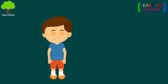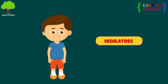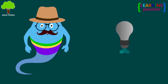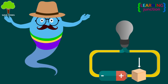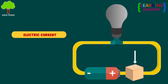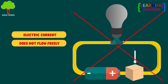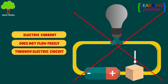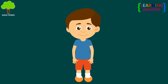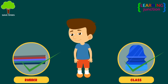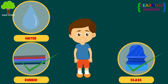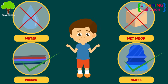Now let's learn about the insulators. An electrical insulator, or bad conductor, is a material in which electric current does not flow freely through an electric circuit. Materials like glass and rubber have very good insulation property, while others like water and wet wood have poor insulation property.